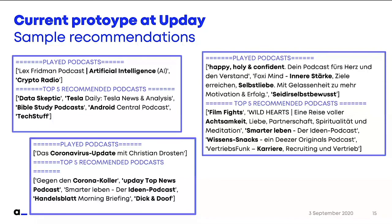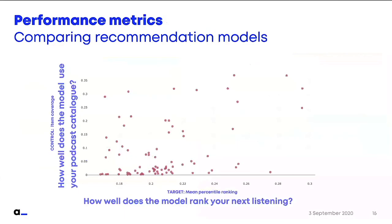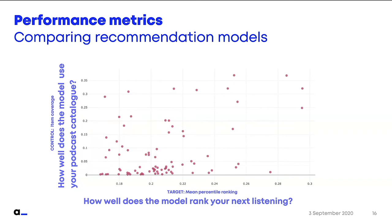We don't yet have an objective metric just by looking at recommendations. So how do we actually measure this? Here is an overview of one of our experiments where we're comparing about 80 models. We want a target metric — shown on the X axis — that measures how well the model ranks or predicts your next listening. We measure this by the mean percentile ranking. There are other measures, and whole papers on how to choose these metrics and their pros and cons. We chose this one.